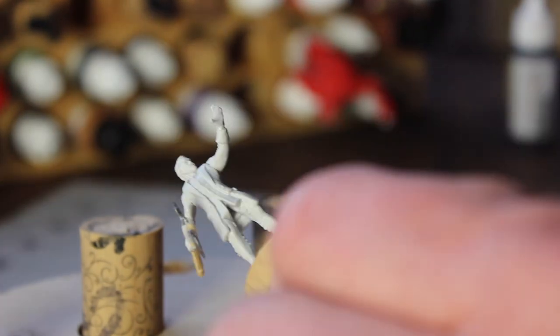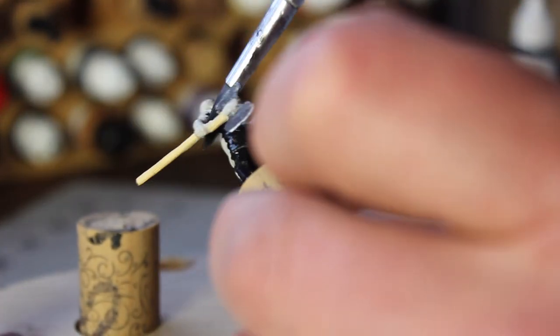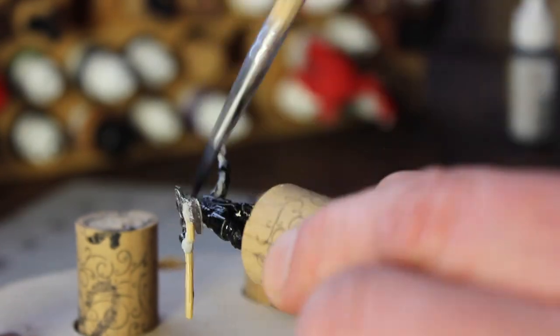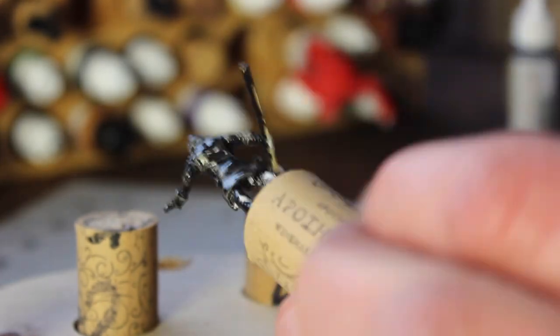I start by coating the entire model, including the axe, in black. That way if I miss any parts, especially in the recesses, they will just look like shadows.